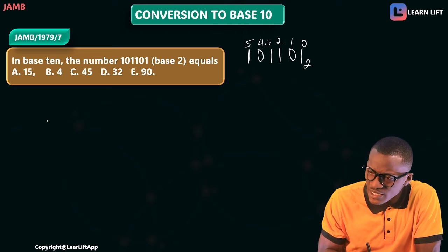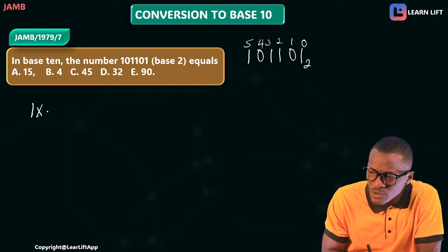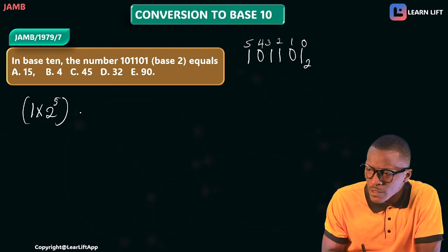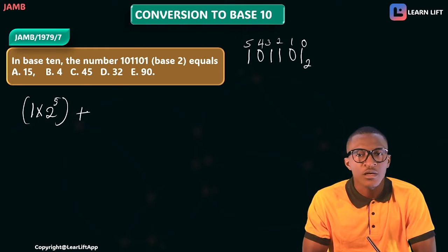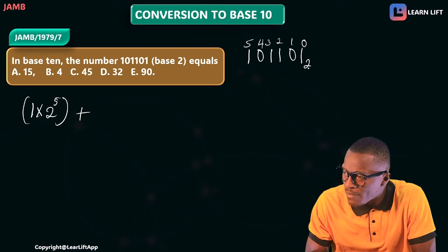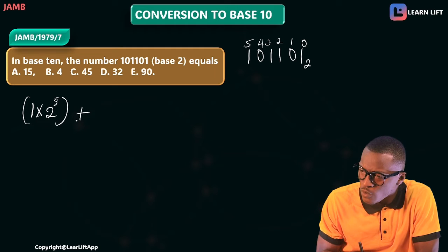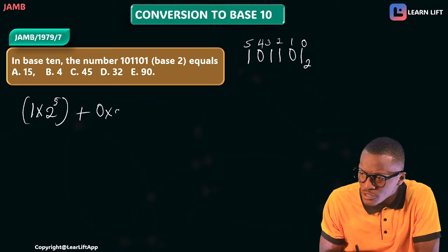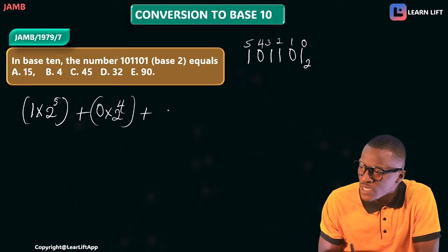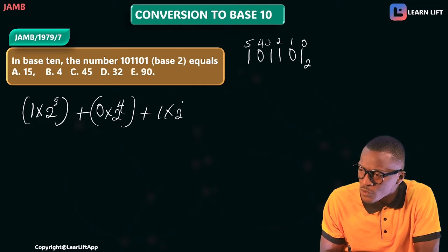Now I'm going to expand this. The first digit gives me 1 times 2 raised to power 5, plus the next digit: 0 times 2 raised to power 4, plus 1 times 2 raised to power 3.